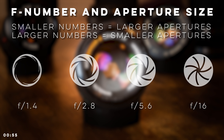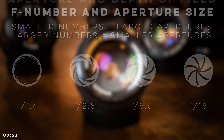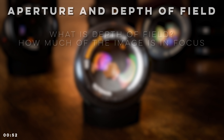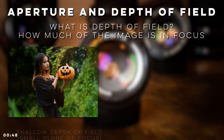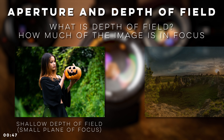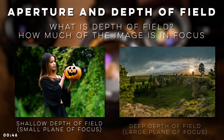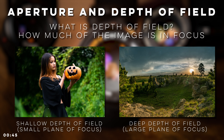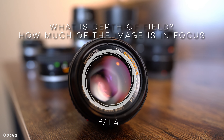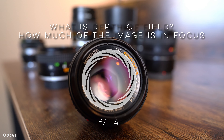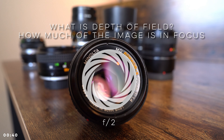Besides controlling exposure, aperture also controls depth of field. Depth of field describes how much of an image is in focus. A shallow depth of field means the plane of focus is small, while a deep depth of field means the plane of focus is large. Decreasing the size of the aperture increases depth of field, and vice versa.